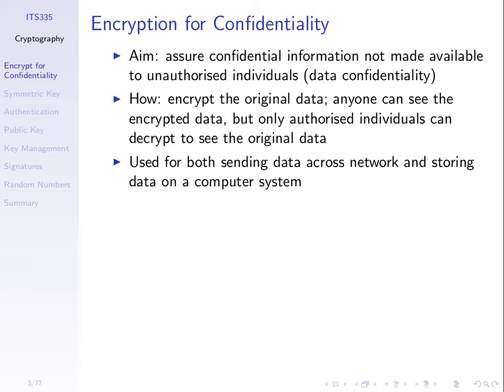We use encryption most commonly for sending data across networks. I send a message from my laptop to some server — say my bank website in Australia. There's a server in Australia, and between my computer and that server there are many places where some malicious user may try and intercept my data and try to read the messages so they can get access to my bank account. Generally for networks we cannot trust them because people can get access to those networks and see the messages. A simple case is when I use WiFi — I send a message wirelessly to the access point, and it's not very hard for anyone to intercept those messages.